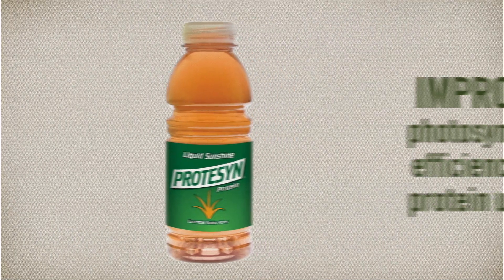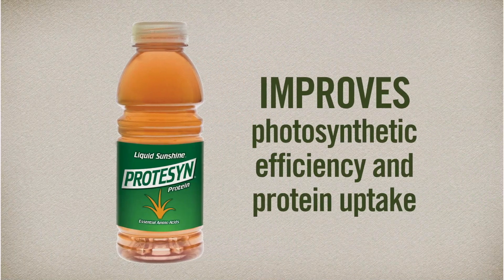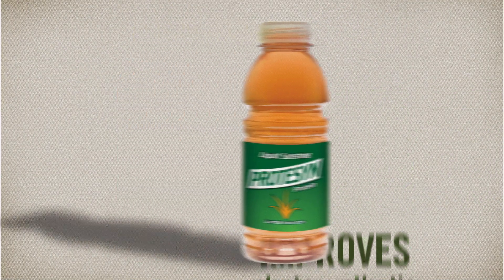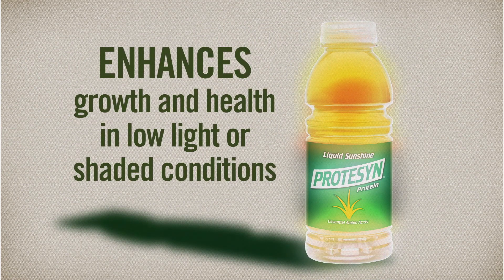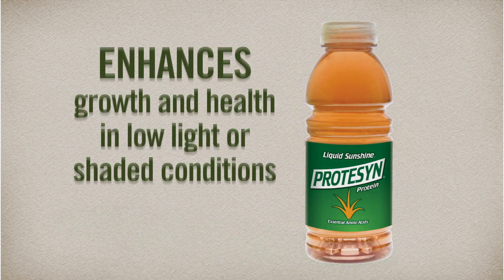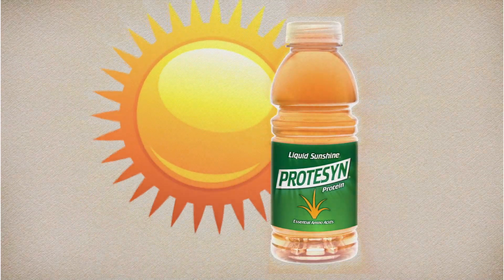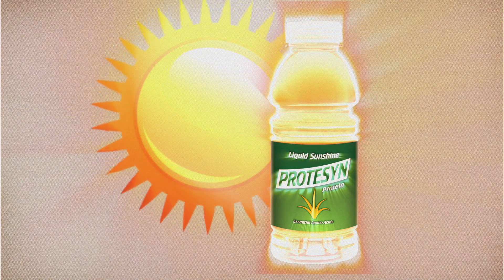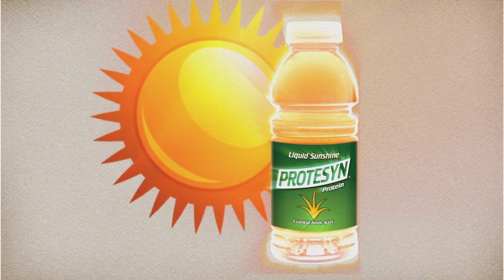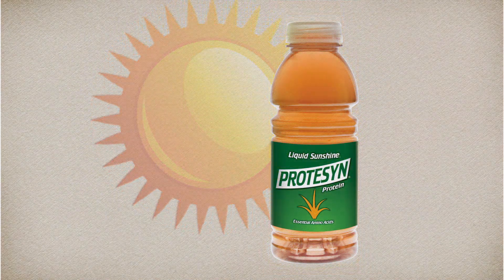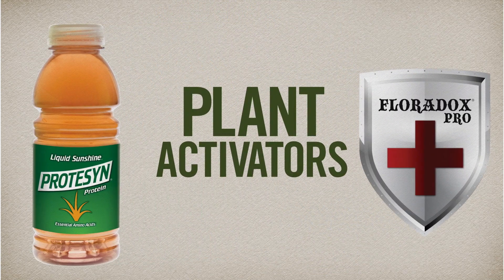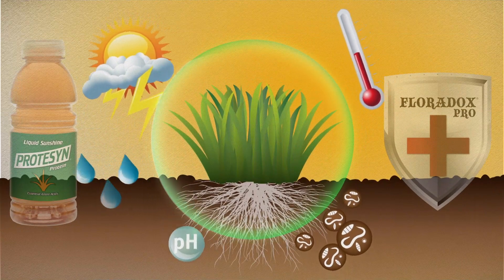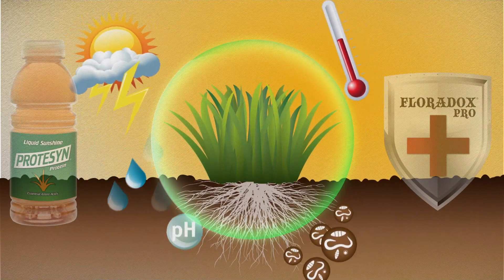Protozen improves the plant's photosynthetic efficiency and protein uptake, which enhances turf growth and health in low light or shaded conditions. This liquid sunshine in a bottle provides everything your turf needs to handle stress and perform under the toughest conditions.